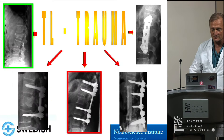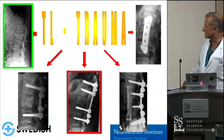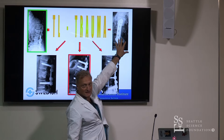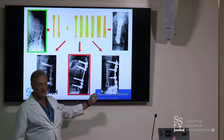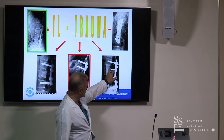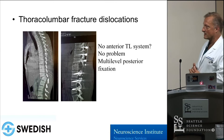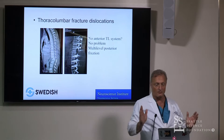For thoracolumbar trauma, my personal preferences are treating non-operatively if neurologically intact, or posterior short-segment fixation. On an acute basis, I recommend against anterior options. For devastating injuries, a combined staged approach — posterior first, then anterior — is applicable by putting short screws into the fractured segments. For dislocations, two above and two below gives a very powerful reduction tool and works very well.